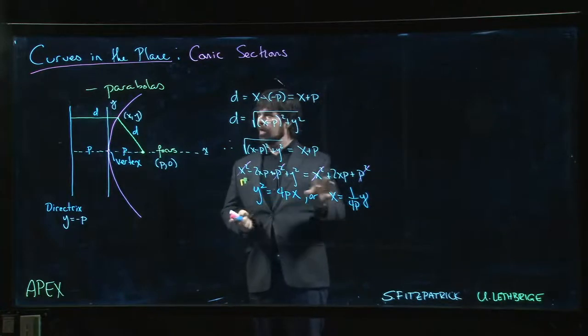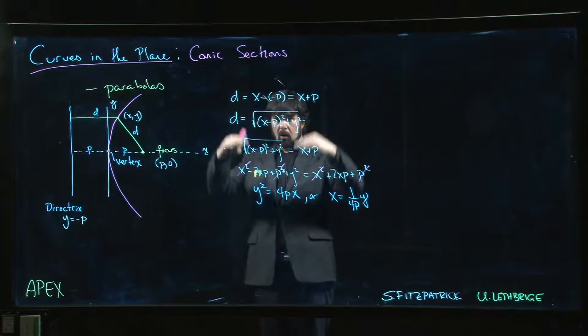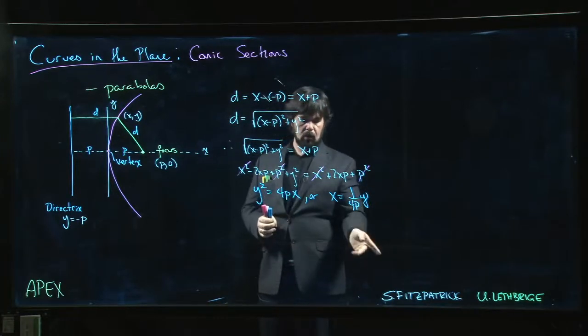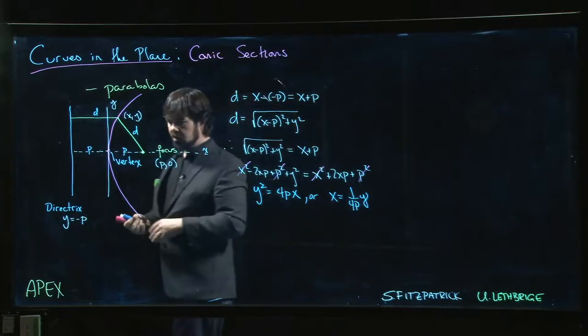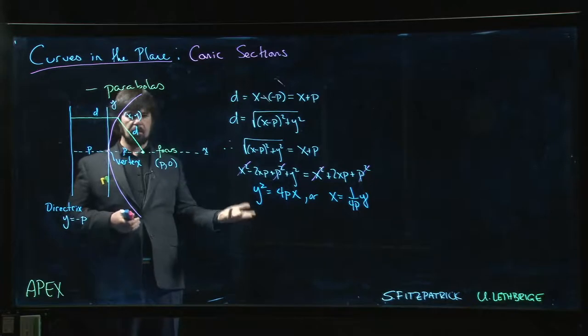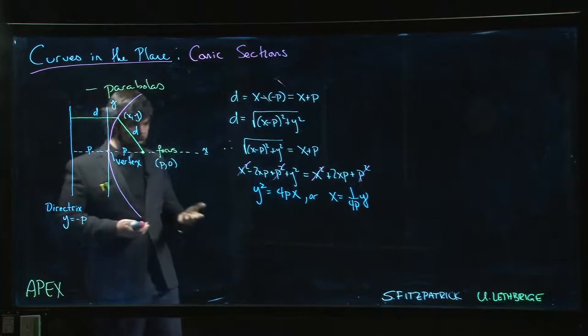Now, if we had set things up so that the parabola opened vertically rather than horizontally, we just swap the roles of x and y here. y would be 1 over 4p times x squared. You get the same result. So that's the equation for a parabola that has its vertex at the origin.